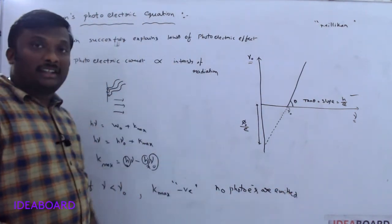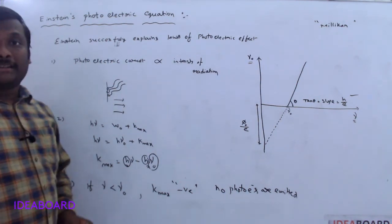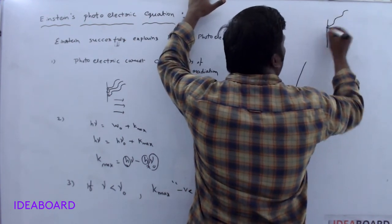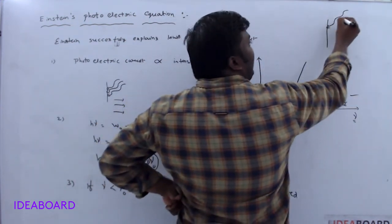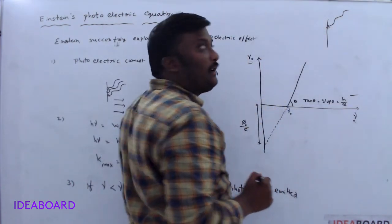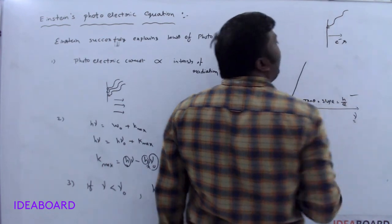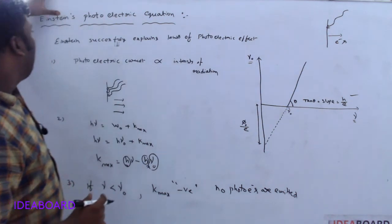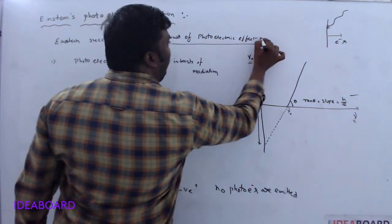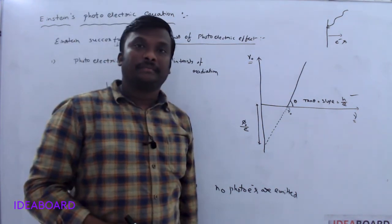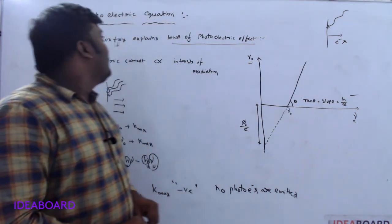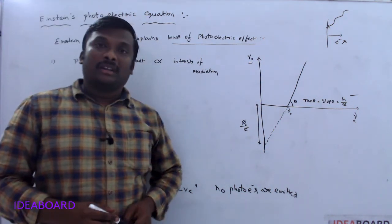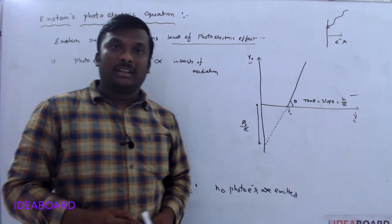The fourth point is that the process is instantaneous. Whenever a photon is incident on the metal surface, the energy of the photon is absorbed by a single electron and it is immediately liberated from the metal surface. In this way, Einstein explains the laws of photoelectric effect. Based on this explanation of the photoelectric equation, we will do some numericals in the next class. Thank you.